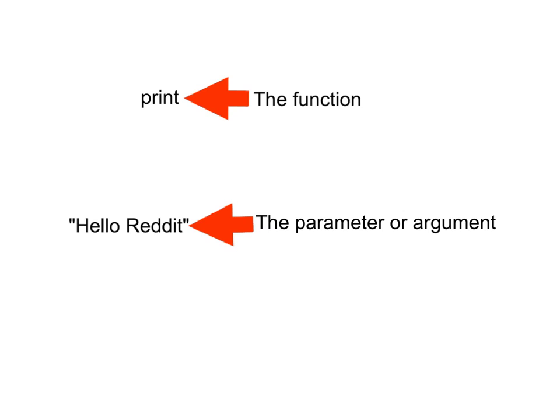You can give a function as many parameters as you like. In this specific example, we have a function called print, and we have a parameter that we are sending to the function, which is a string of text called "Hello Reddit." The parameter simply tells the function what it is that we want to print. If we called the function and we didn't give it a parameter, we wouldn't be doing anything — how can you print something if you don't know what you're supposed to print?